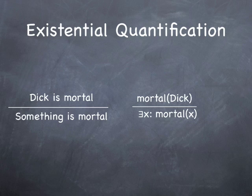But it's really easy. All it means is something is mortal. So a good way to read it is the backwards E, you read it as 'there exists something' and then read the colon as 'such that'. So it's like there exists x such that mortal x. That's really all there is to it.